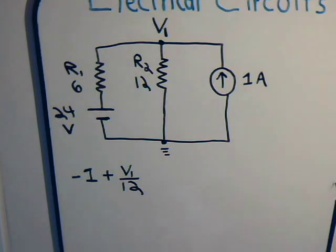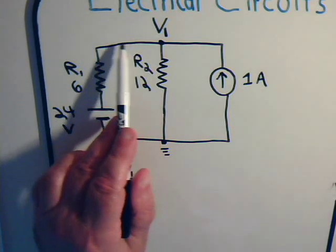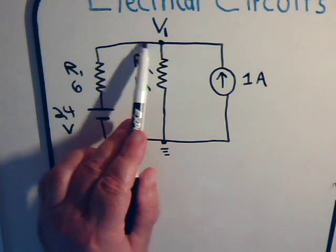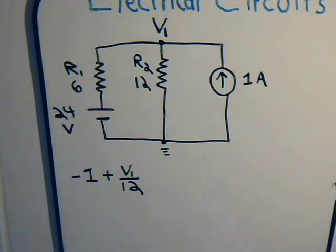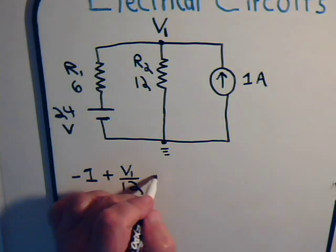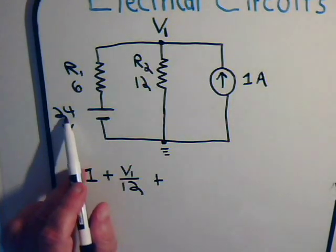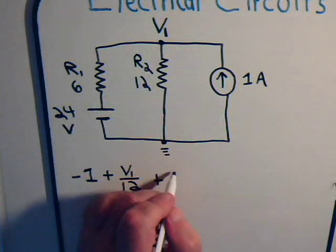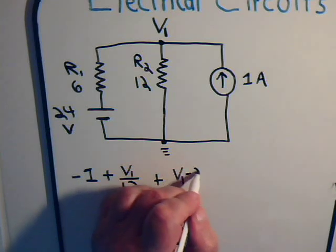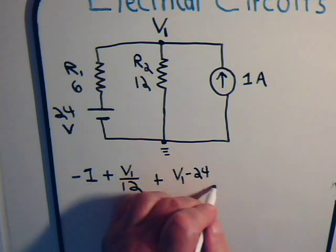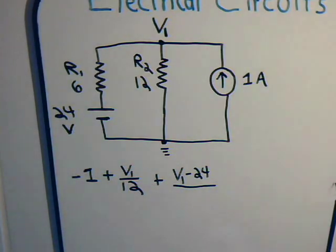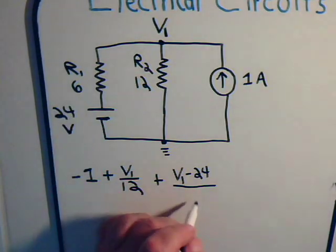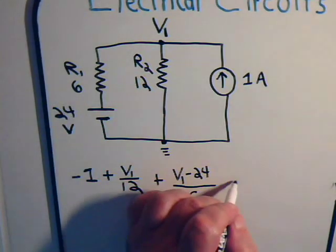And again, for the moment, we're assuming that this unknown current right here is going out of the node, and the amount of that current would be V1 minus 24 divided by the value of the resistor, 6 ohms, and this equals zero.